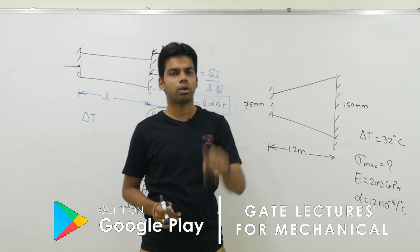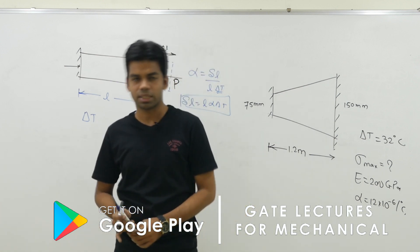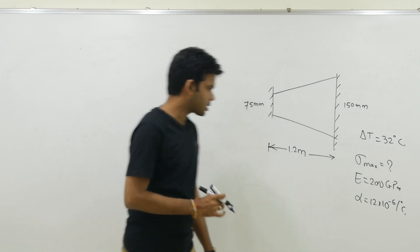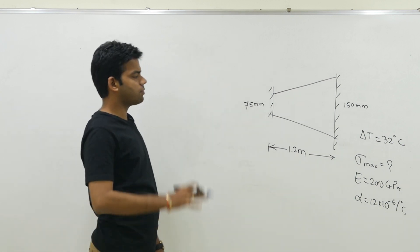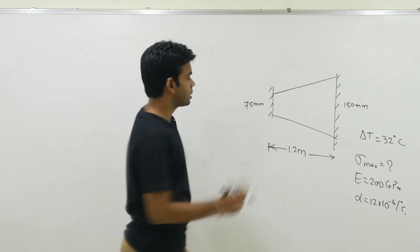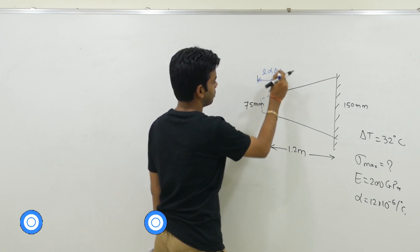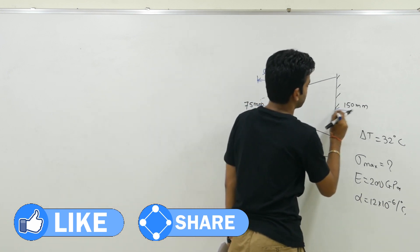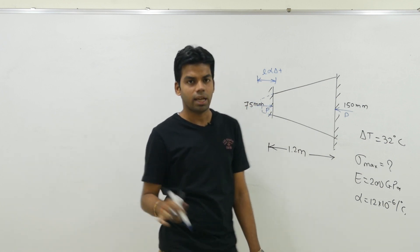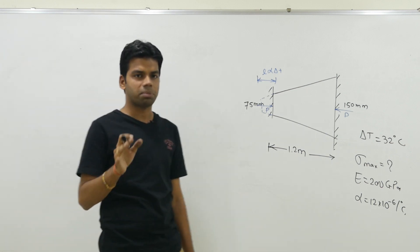I would ask you to solve this question by yourself and comment your answer, then watch the next part of the video to check. Now, same approach we apply here. First we see: if it was free to expand, how much would it expand? If it was freely expanding, it would be L·α·ΔT. But the external fixed support applies a certain force, and now the axial force is applied on the tapered bar. The deflection because of the axial force on the tapered bar — if you don't remember the formula, I'll give you a simple trick to recall it.